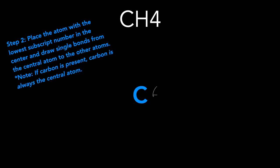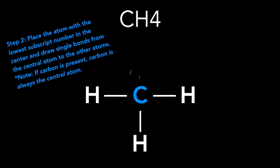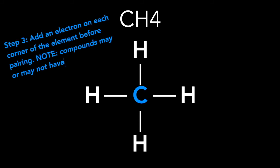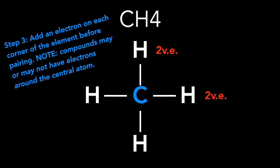Step two: place the atom with the lowest subscript number in the center and draw single bonds from the central atom to other atoms. If carbon is present, carbon is always the central atom. Step three: add an electron on each corner of the element before pairing. Note: compounds may or may not have electrons around the central atom. We counted eight valence electrons in total for CH4, so let's count how many we have so far. Each line represents two electrons — so we have two electrons in the first C–H bond, four, six, and eight valence electrons for CH4. Carbon already has eight valence electrons around it, satisfying the octet rule. But how can all the hydrogens satisfy the octet rule if we already have the correct total number of eight valence electrons in CH4?